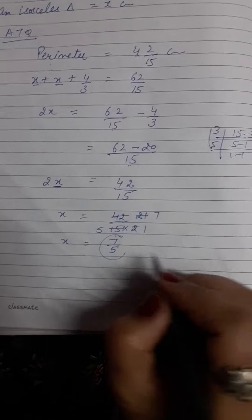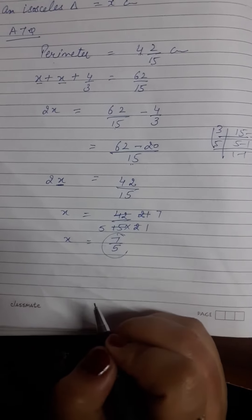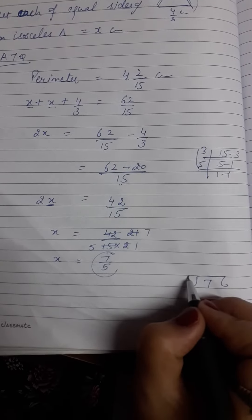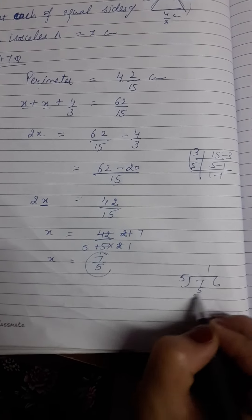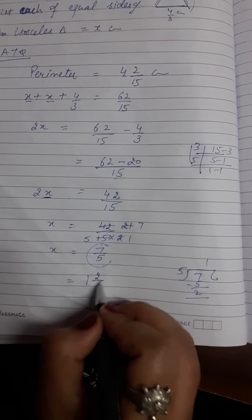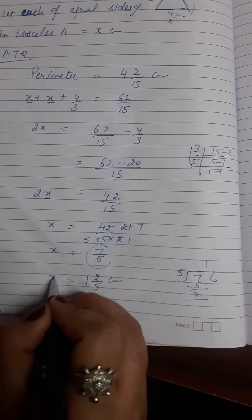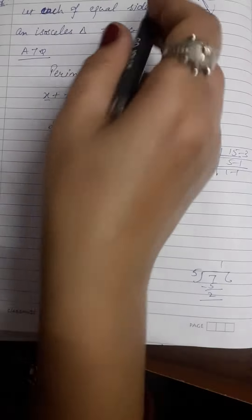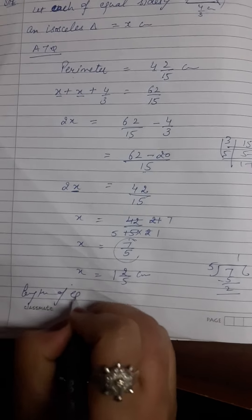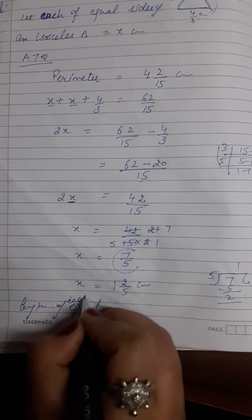Numerator is greater than denominator, so we can also write in mixed fraction. 5 into 7 is 1, with remainder 2. So we can write it as 1 and 2 by 5 cm. So x is the equal sides. Length of each equal side is 1 and 2 by 5 cm.